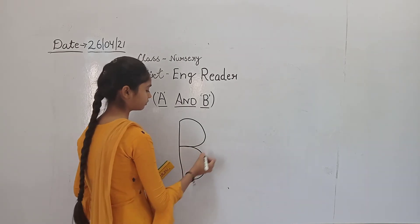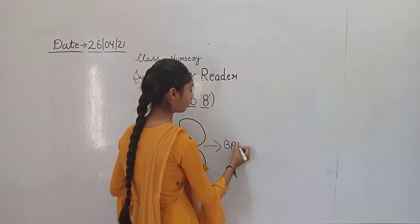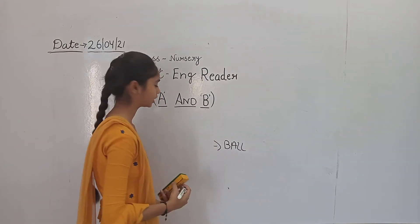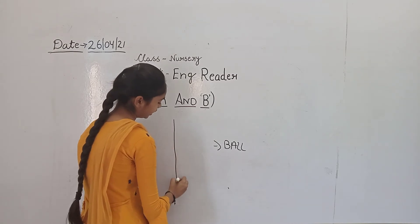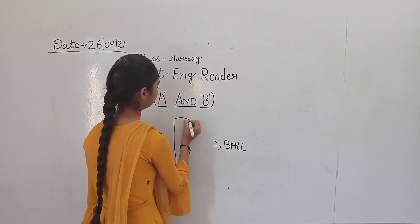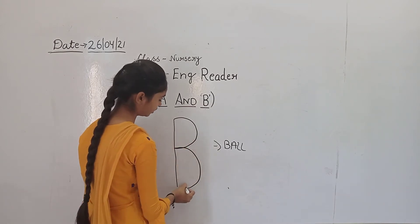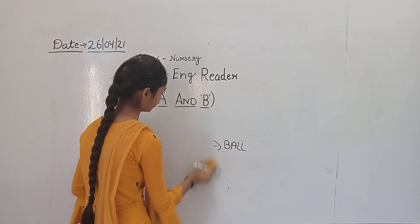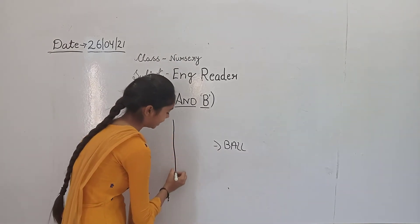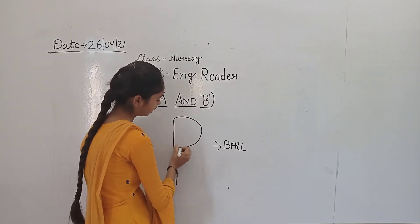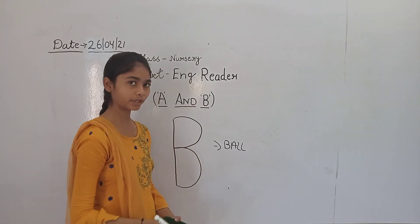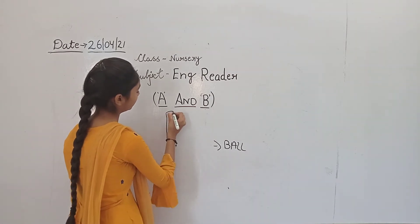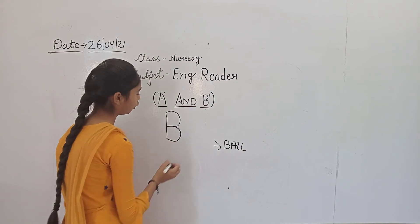Again. What is B for? B for ball. B for ball. Ball means game. This is our standing line. B for ball. Again — standing line, curve, again curve. B for ball. Standing line, curve, again curve. B for ball.